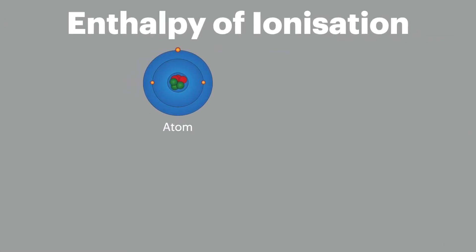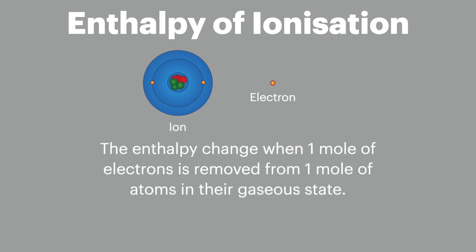Saving the best to last, we have the enthalpy of ionization. This is defined as the enthalpy change when one mole of electrons is removed from one mole of atoms in their gaseous state. When we write out the equation for this one, we must remember to include the state symbols as well.